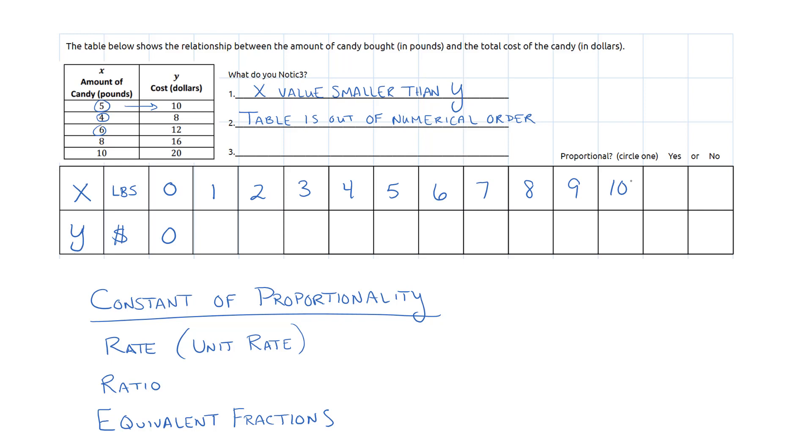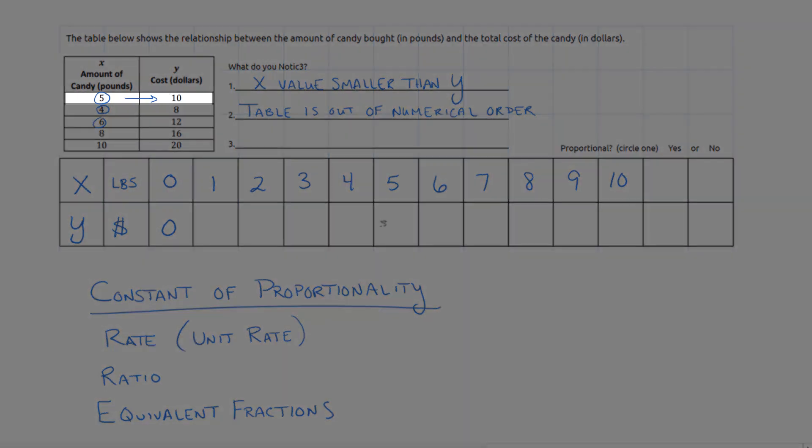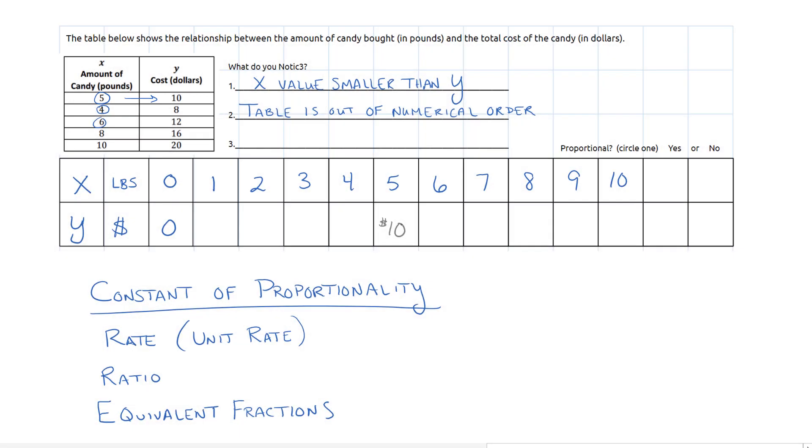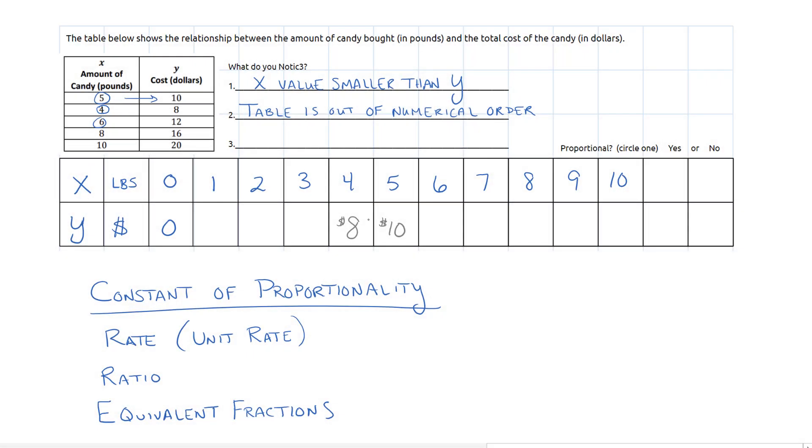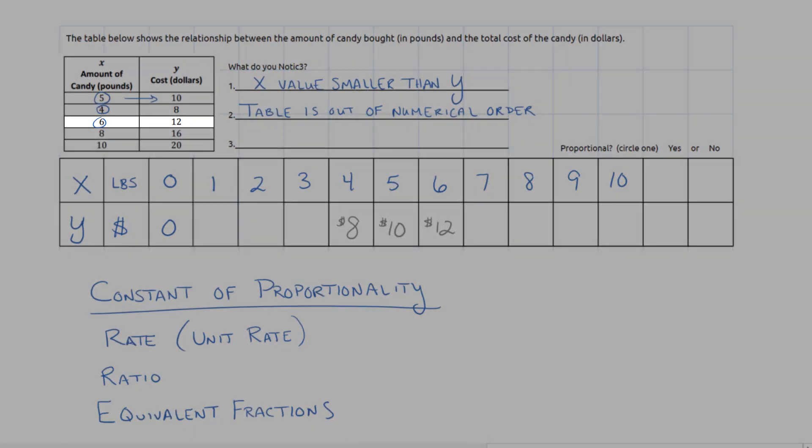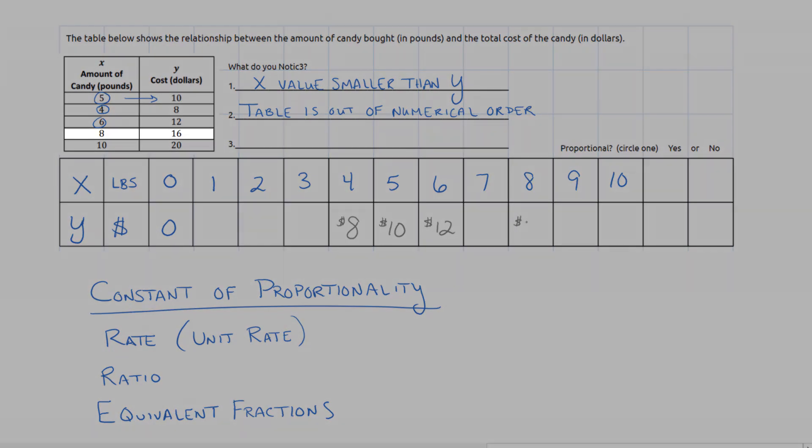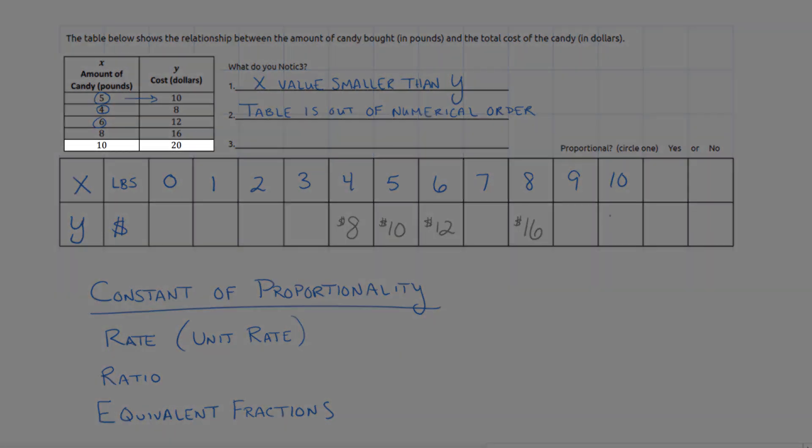Now I'm going to fill in what I already know. I know that five pounds of candy costs ten dollars. I know that four pounds of candy costs eight. And six costs twelve. And as I'm writing these in, I'm trying to find out what is the pattern that they're counting by for the y value.